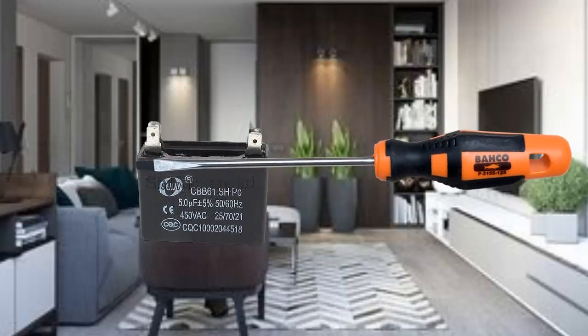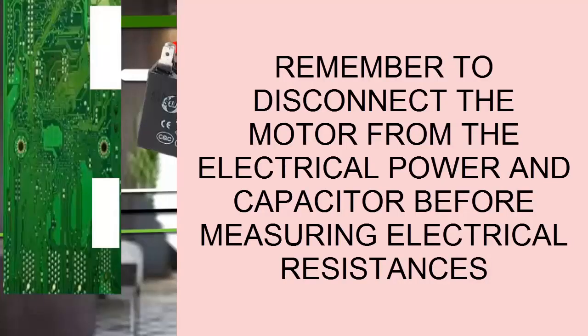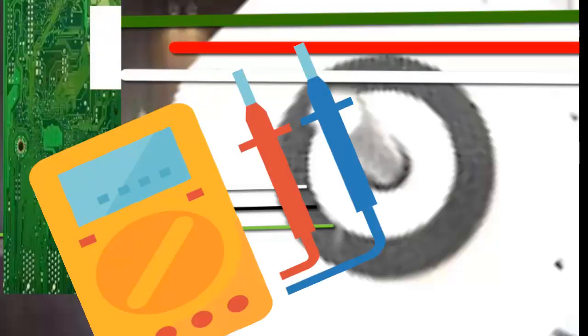Tenth, if the fault is not in the capacitor, measure the resistance between the pairs of thick cables with a multimeter. For this, with the equipment without power or capacitor, measure the resistance between the green and red cables, between the white and red cables, and between the green and white cables.